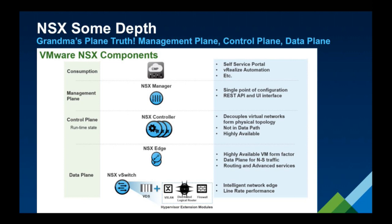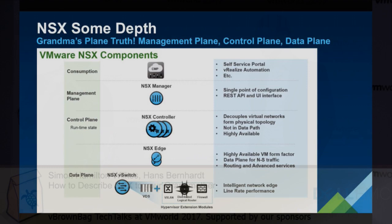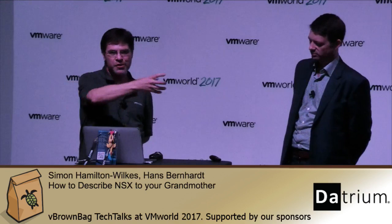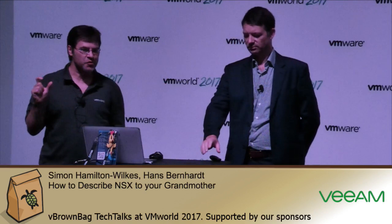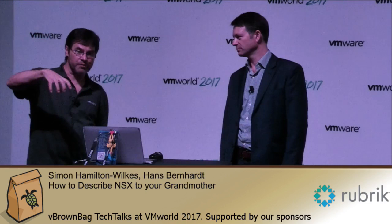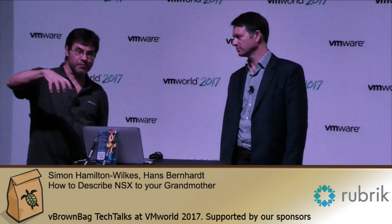At the data plane you see the distributed virtual switch, VXLANs, the distributed logical router, and the distributed firewall — that's the stuff happening for your virtual machines. The NSX Edge above that provides additional services such as NAT, VPN, or load balancing. To control these networks and track VXLANs and virtual machines, you have the NSX Controllers. To manage everything and provide APIs that a cloud management system can consume, you have the NSX Manager. On top of the stack you have something like vRealize Automation to talk to NSX Manager and request these network constructs.